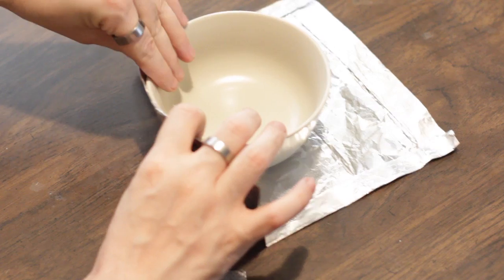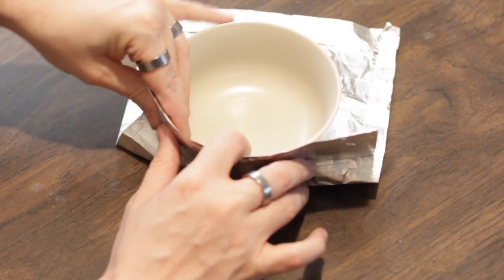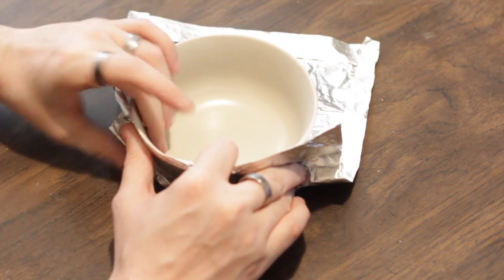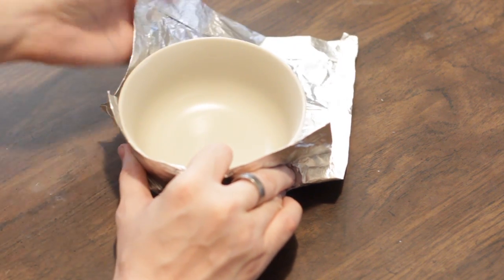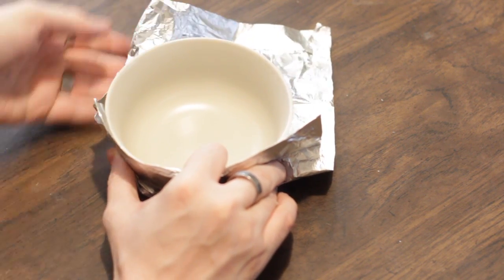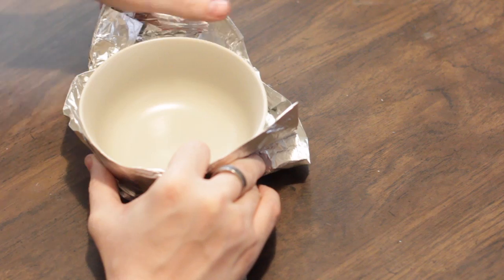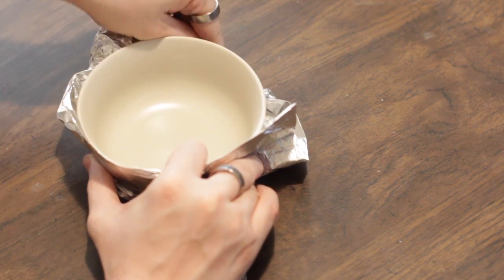Hold it right up to about where the bowl is and then just start molding it around the bowl. So hold the bowl steady with one hand and then slowly around the edges, pick up the foil. You can fold it in, pick up the foil, fold this edge in a little bit and just